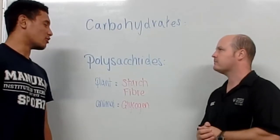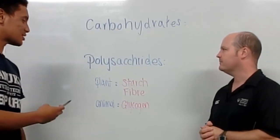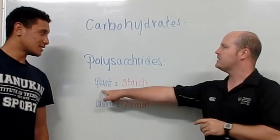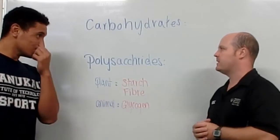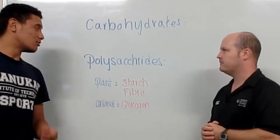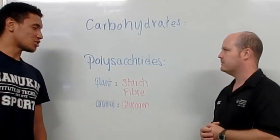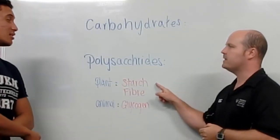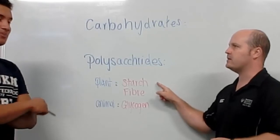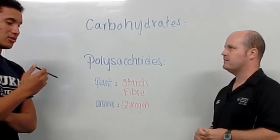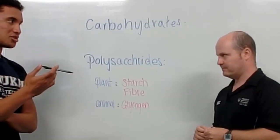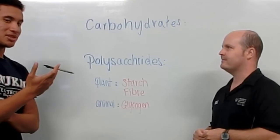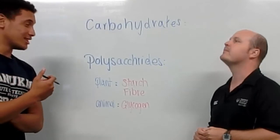So what are our plant sources of polysaccharides? They're starch. And what would be an example of starch? Starch is found in taro, or taros, and potatoes.